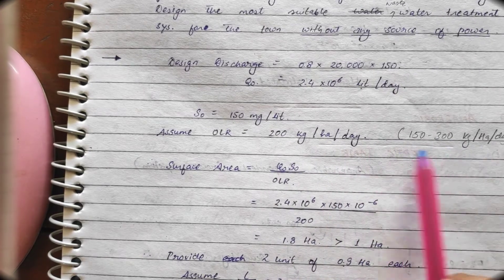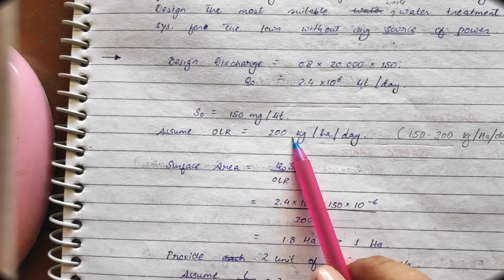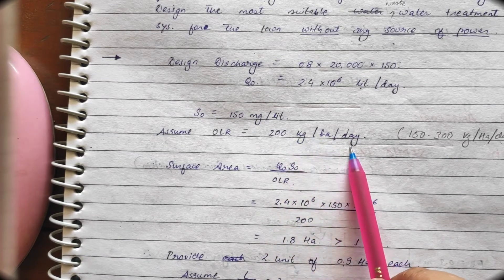This changes, this ranges from 150 to 300. So, we are considering the average of it. That is the 200 kg per hectares per day.